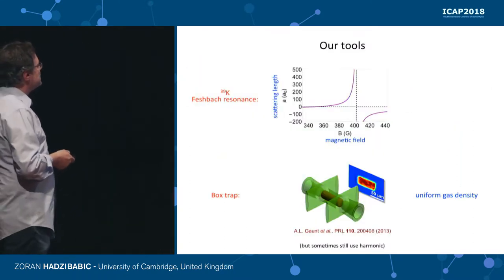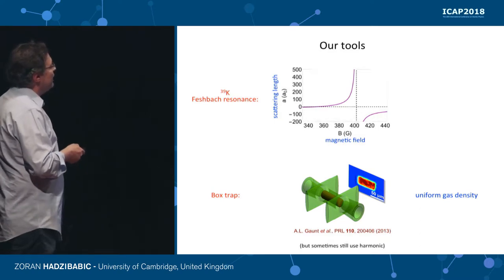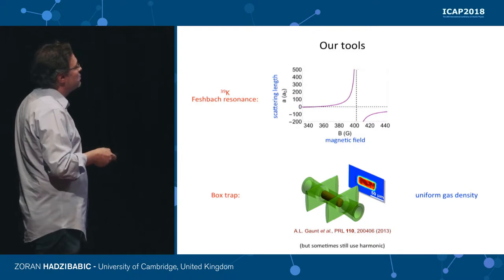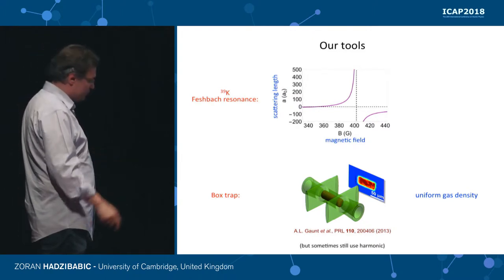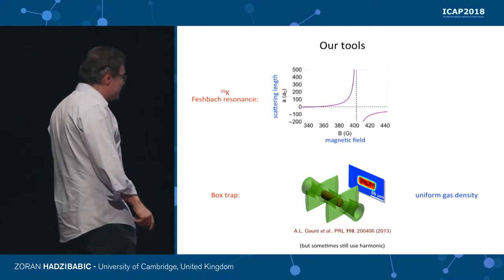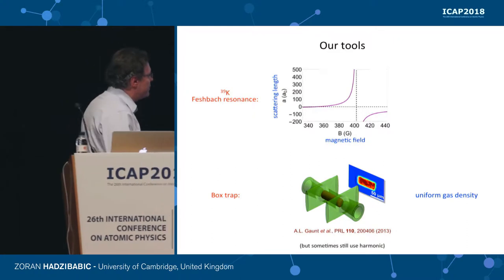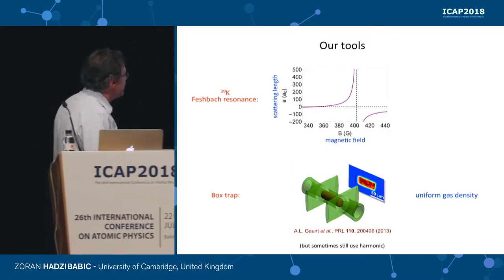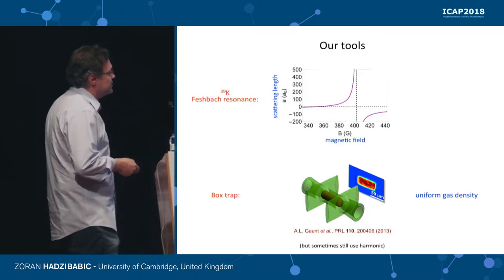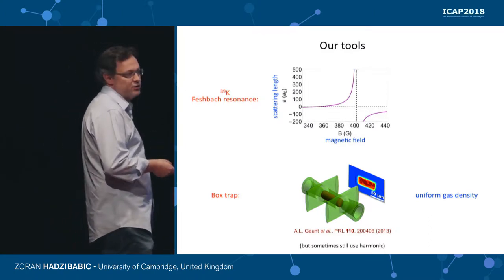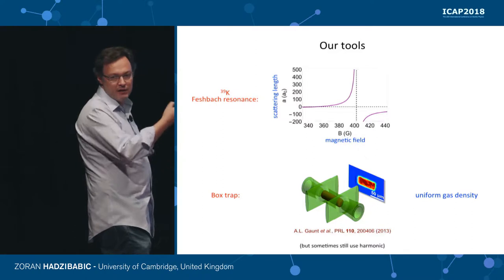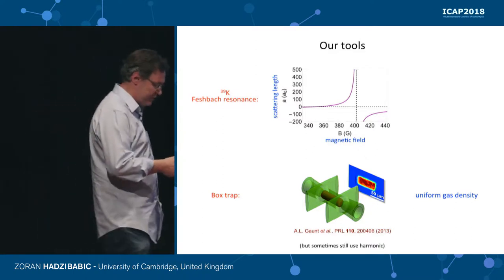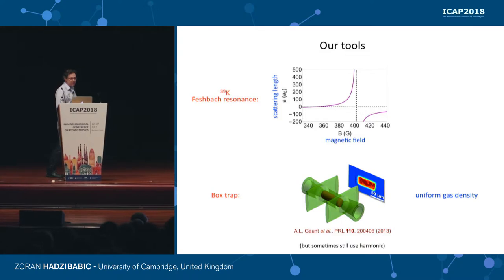These are our experimental tools. We work with potassium-39, which has a nice broad Feshbach resonance centered at 400 Gauss, which we use to tune the interaction strength. In most of our experiments, we no longer use the traditional harmonic trap but this optical box trap, which has the advantage that the gas density is uniform inside the box, making it much easier to interpret our experiments and compare with theory, especially when studying nonlinear effects.